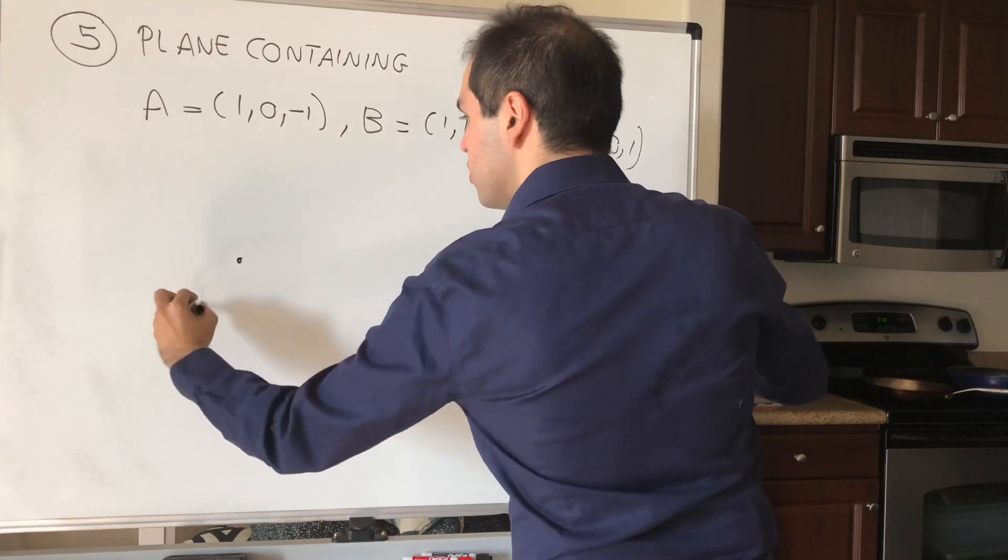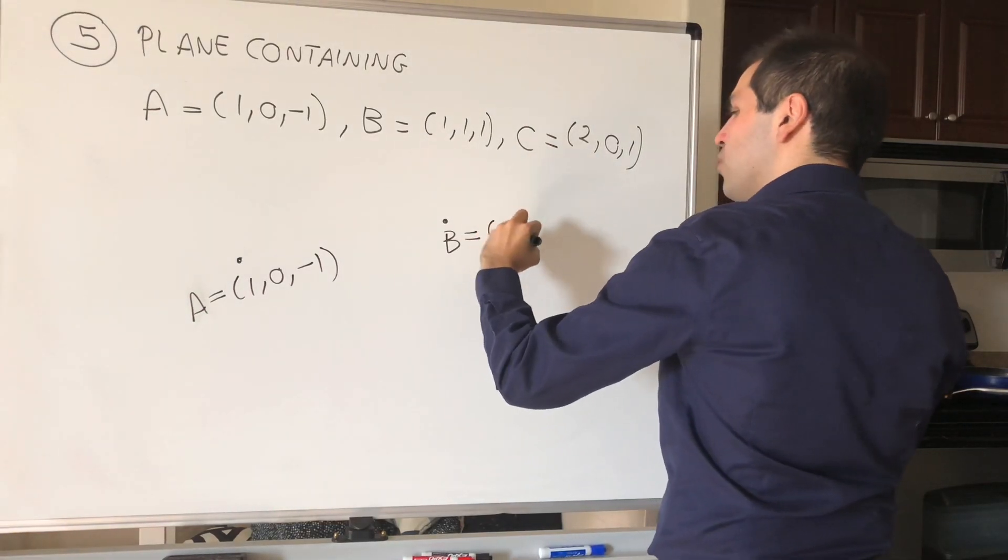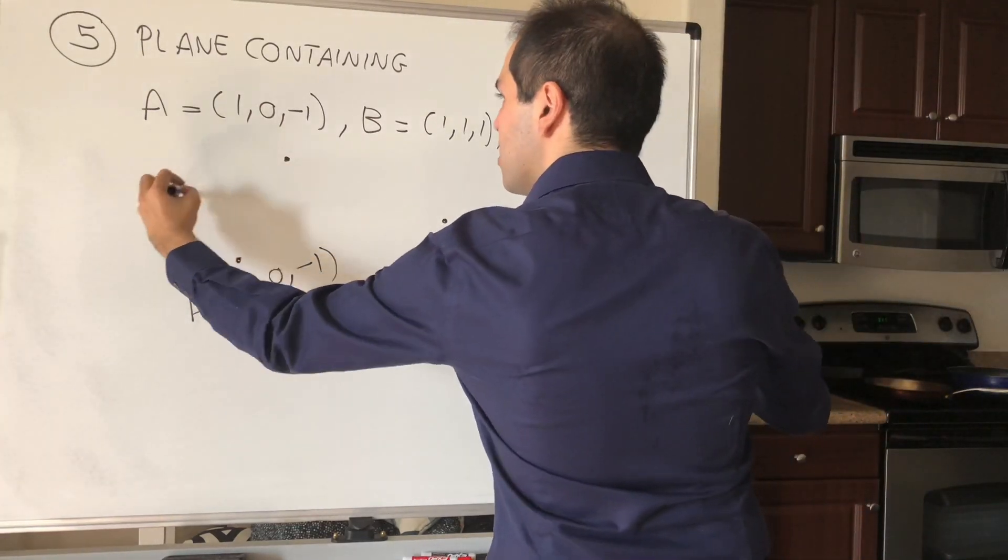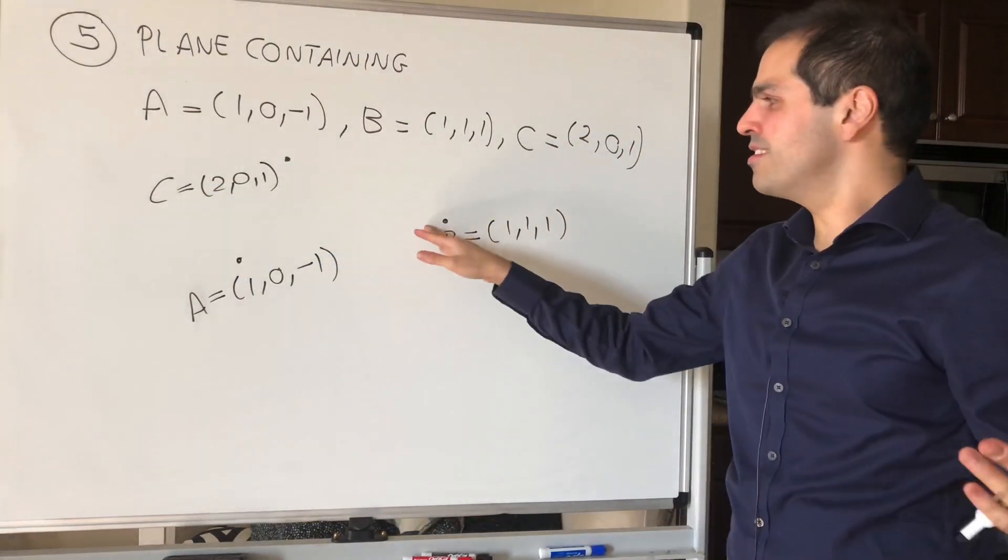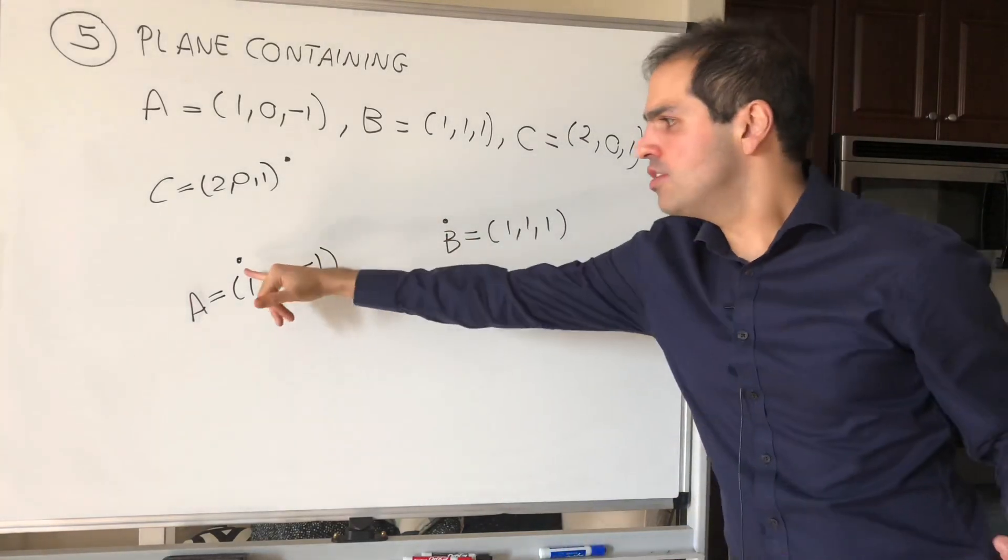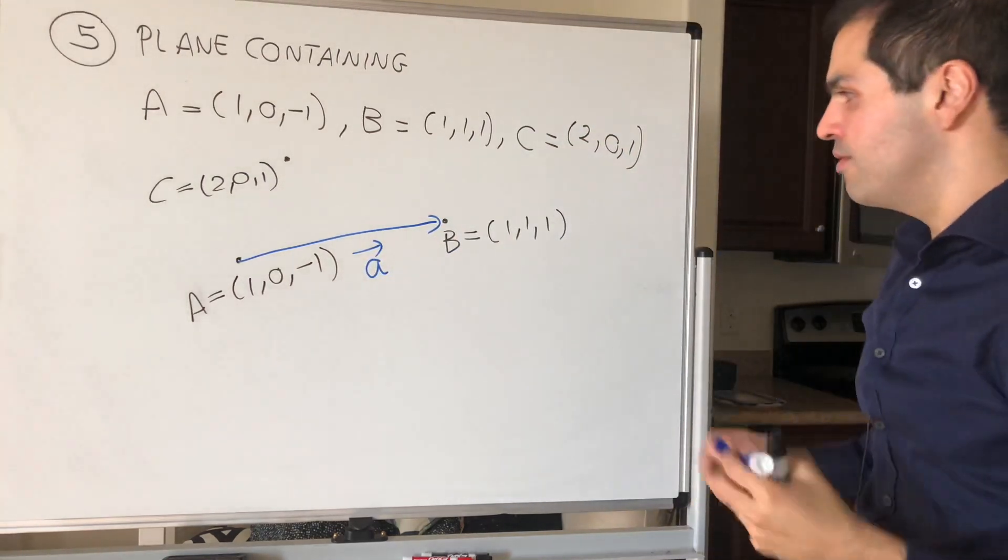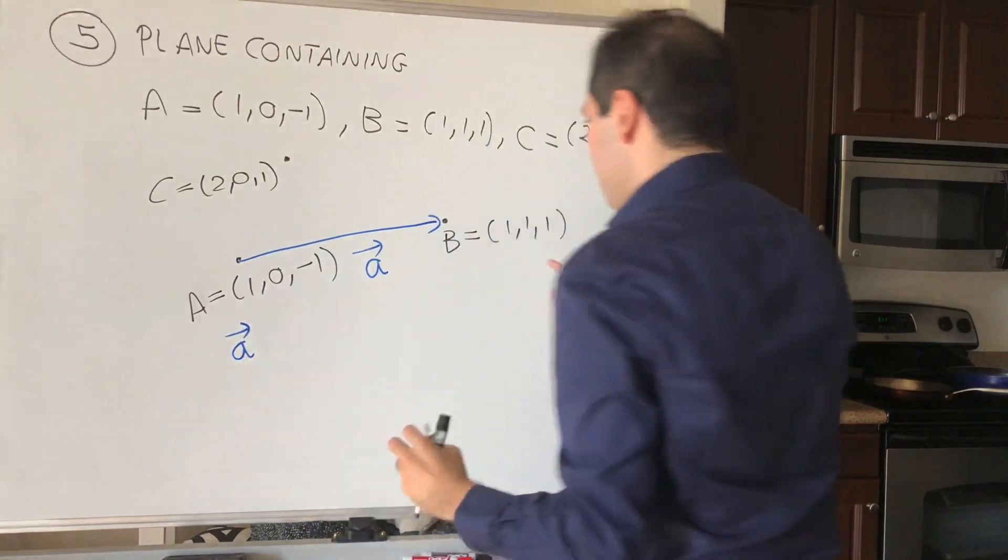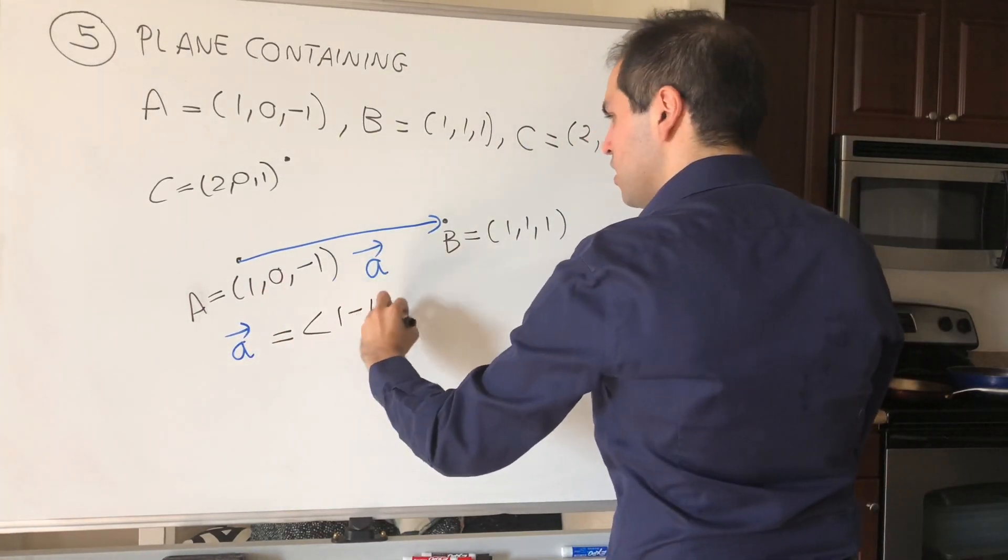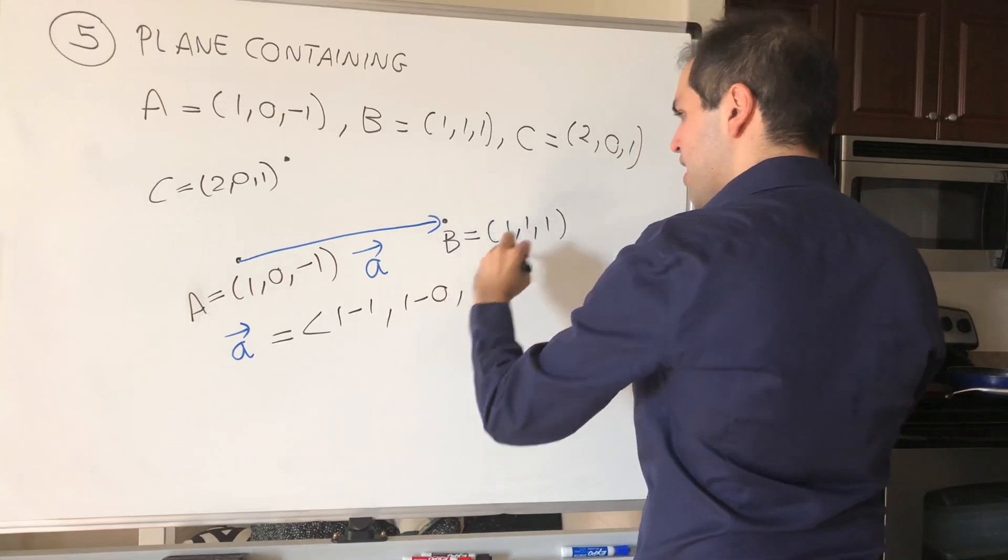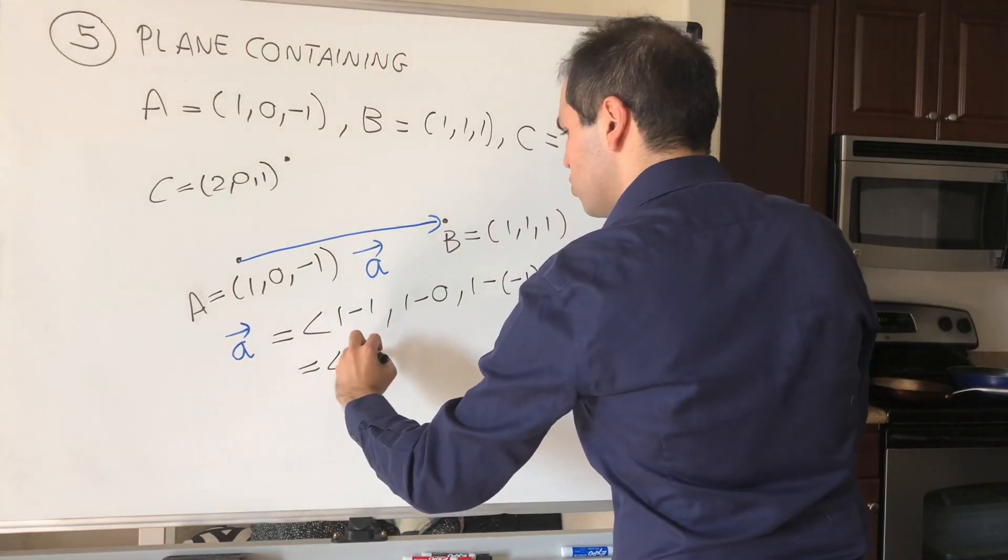Again, so a is (1,0,-1). And then b, again not up to scale, b is (1,1,1). And then c is maybe here, (2,0,1). And then, just as usual for our planes, you first find the vectors connecting the points. So here, let's find the vector a,b, which I just write as vector a. So vector a, it's simply b minus a. So this point minus this point, which just becomes the vector (1 minus 1, 1 minus 0, and then 1 minus minus 1), which is simply the vector (0,1,2).